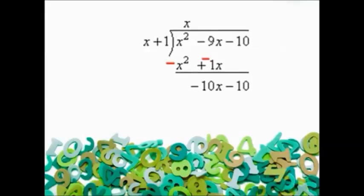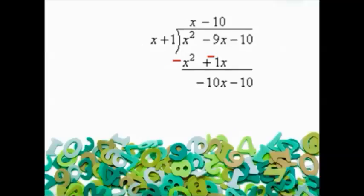Now, I'll look at the x from the divisor and the new leading term, the -10x in the bottom line of the division. If I divide -10x by x, I get -10. So I'll put that on top.